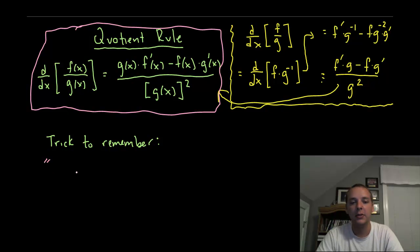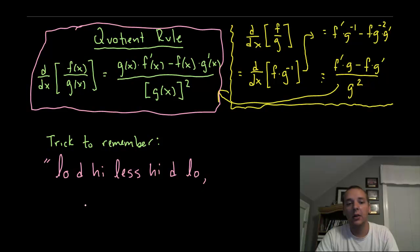It's a little phrase that goes like this: low d high, less high d low. There's a lengthy version: low d high less high d low and down below denominator squared must go. Or the short version: low d high less high d low O low squared.